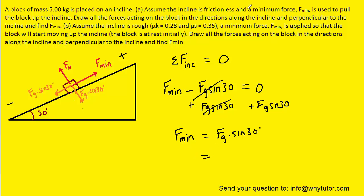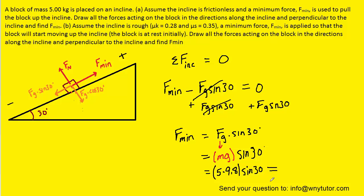Recalling that Fg = mg, we substitute mg for Fg. Plugging in the known values — mass of 5 kg and g = 9.8 — and multiplying by sin(30°), with the calculator in degree mode, we get exactly 24.5 Newtons. This is the minimum force required to pull the block up the ramp at constant speed.